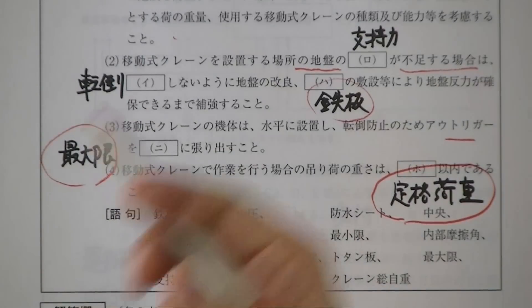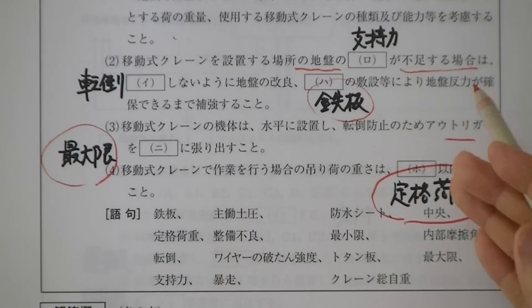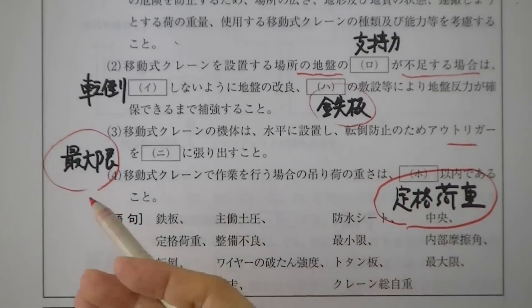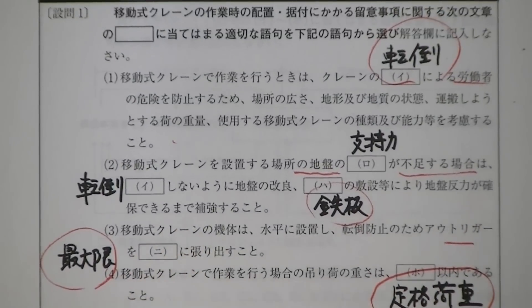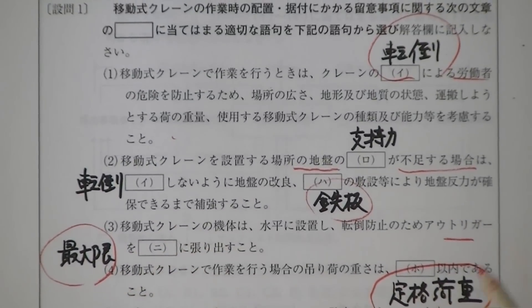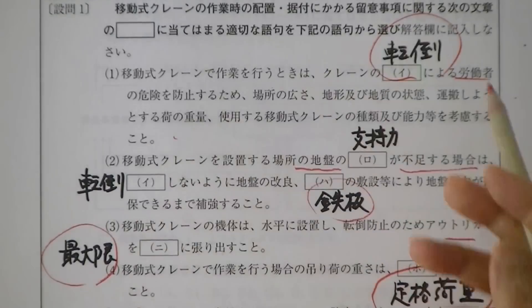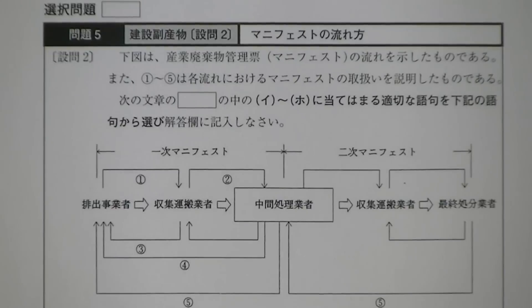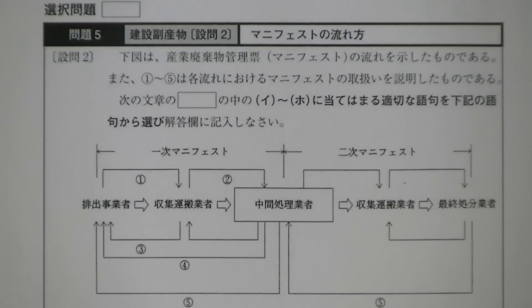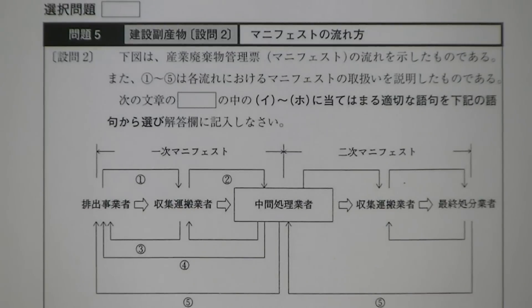アウトリガーは最大限に張り出します。移動式クレーンで作業する場合の吊り荷重は、定格荷重が決まっているのでそれを超えて荷重をかけてはいけません。転倒防止、支持力・鉄板、アウトリガーの最大限張り出し、定格荷重の遵守、これらが今年のテーマです。次に廃棄物関係のマニフェストの流れが出てきます。